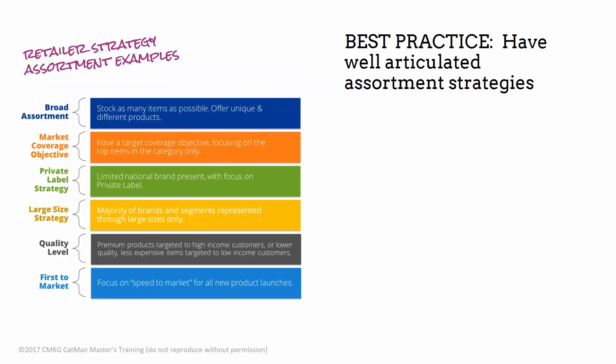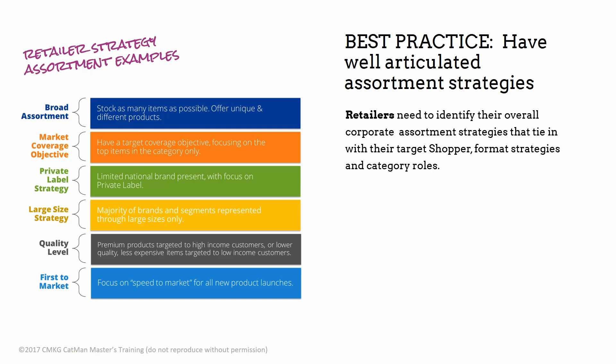Our first best practice is to have well-articulated assortment strategies. Retailers need to have well-articulated strategies, like the examples on the left here, to identify what their overall strategies are and how they tie in with assortment decisions that are made across their categories.